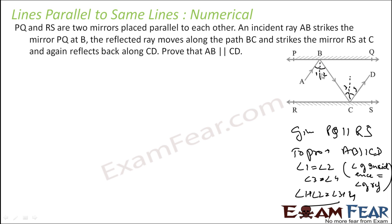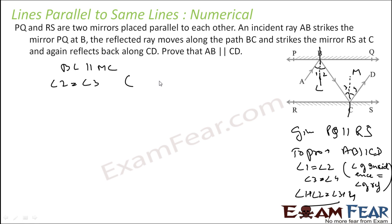Now let's draw lines: BL perpendicular to PQ and MC perpendicular to RS. Both lines are perpendicular to their respective parallel mirrors, so BL is parallel to MC. Since BL is parallel to MC, we can see that angle 2 is equal to angle 3 as alternate angles — that is the key proof.